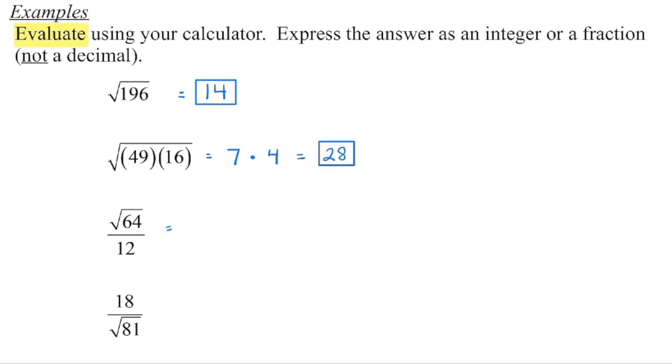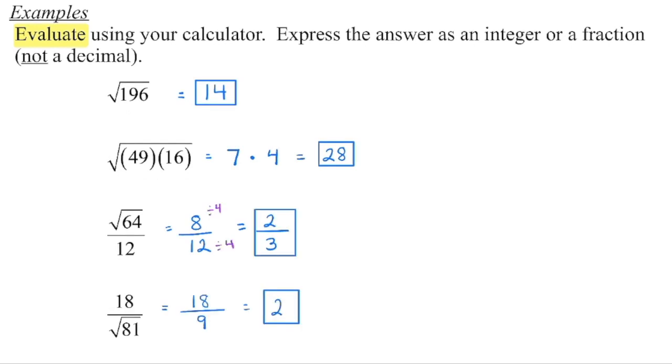Same thing in this next one, we know already that 64 is a perfect square, so the square root of 64 is 8, and then we have 12 on the denominator. We can reduce this, we know 8 divided by 4 is 2, we know 12 divided by 4 is 3. And similarly, we know that 81 is also a perfect square, the square root of 81 is 9, and then 18 divided by 9 gives us a value of 2.